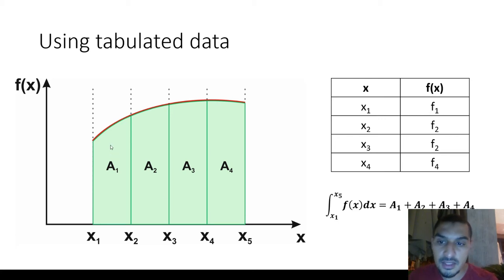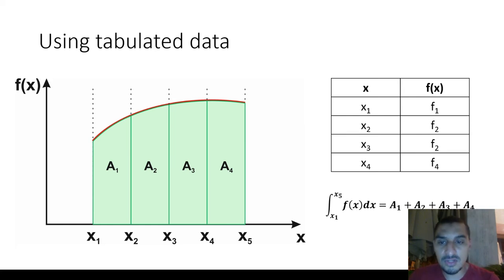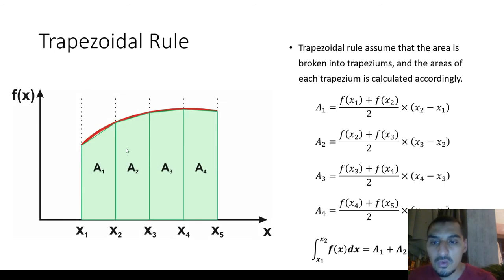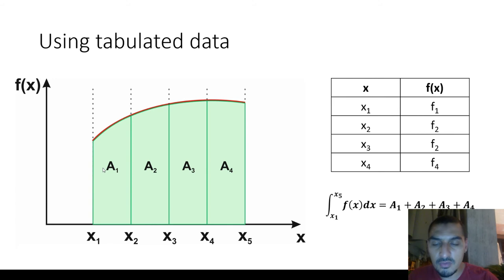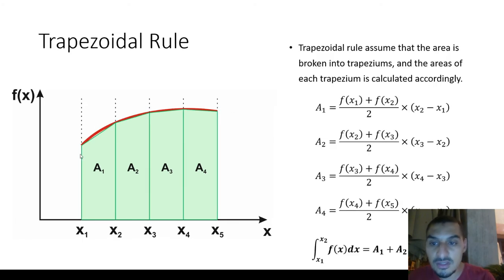There are many methods to calculate the area of each part, and the difference between graphical integration methods is basically in how the area calculations are done. The trapezoidal rule is based on the assumption that all these areas are trapezoids. Looking at each area, the sides are curved because the function is curved — but the trapezoidal rule assumes these are straight lines.